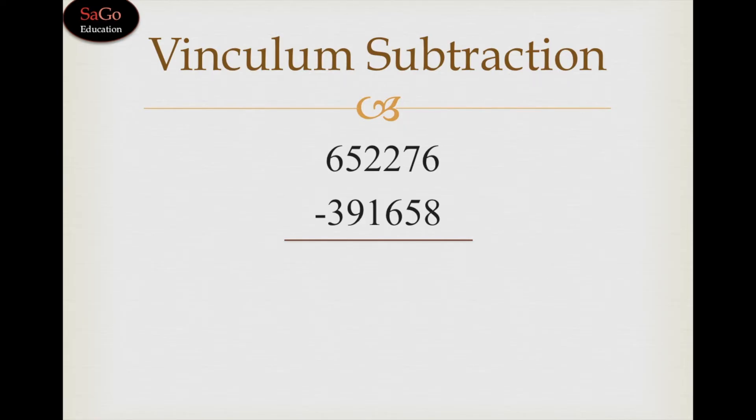Let's find out another sum: 652276 minus 391658. 6 minus 8 is minus 2, write down 2 bar. 7 minus 5 is 2, write down 2. 2 minus 6 is minus 4, write down 4 bar. 2 minus 1 is 1, write 1. 5 minus 9 is minus 4, write 4 bar. And 6 minus 3 is 3, write down 3.